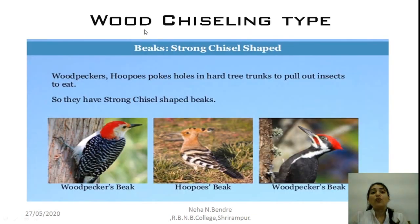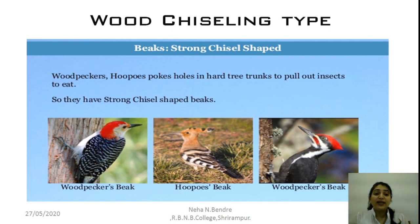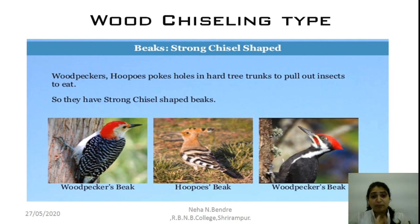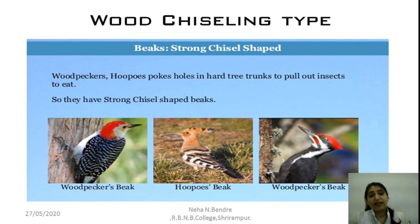Next is the wood chiseling type of beak, found in the woodpecker and hoopoe. These birds are always found pecking trees or wood — they make holes in the hard tree trunks to pull out insects and eat them. For that purpose, they need a very strong, chisel-shaped beak. Just as we have a chisel instrument with sharp ridges, the woodpecker has this wood chiseling type of beak.